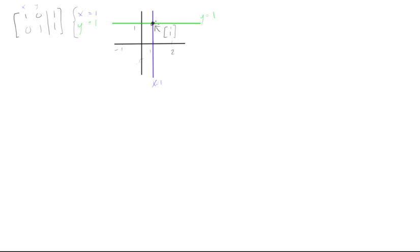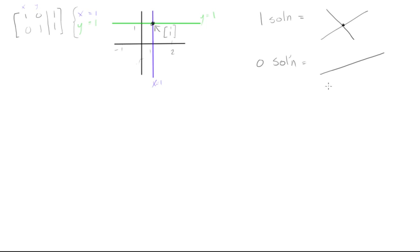What would it look like if we had zero solutions or infinite solutions? For one solution, we have two lines intersecting at a single point. For zero solutions, the two lines would be parallel — ensuring they never intersect, because if they're even slightly unparallel they will intersect at some point.